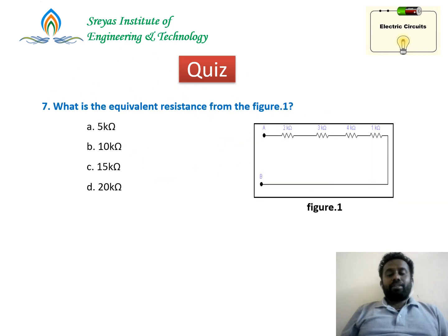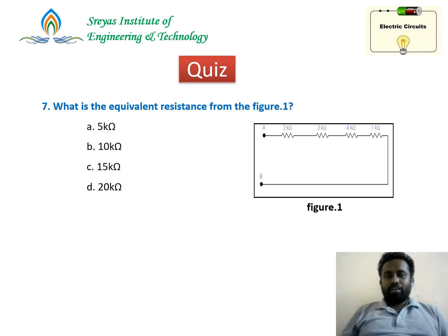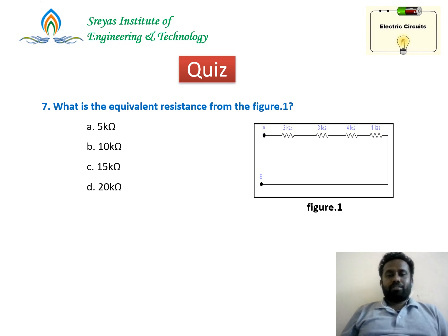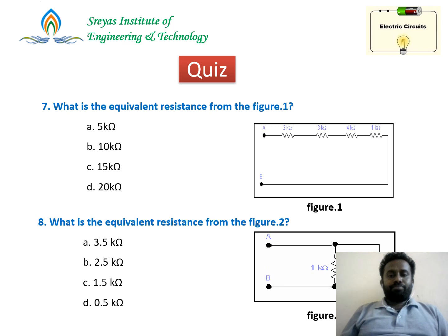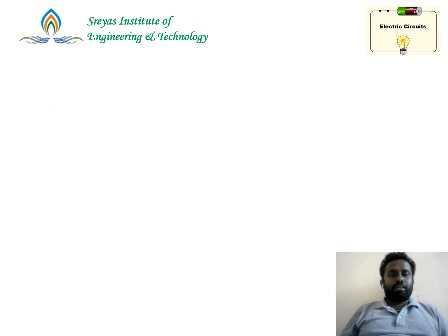Seventh question: what is the equivalent resistance? Given 2 kilo-ohm, 3 kilo-ohm, 4 kilo-ohm, and 1 kilo-ohm resistors — kilo is 1000 ohms, so 2×10³, 3×10³, 4×10³, and 1×10³ ohms. Check whether all four resistors are connected in series, parallel, or series-parallel combination, and find the equivalent resistance across A and B. These are the answers for these questions — check whether you have answered them correctly.